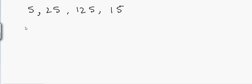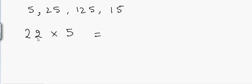Let's do the first one — multiply by 5. Suppose I have the number 22 and I want to multiply 22 by 5. All I have to do is divide 22 by 2, which gives 11, and then put a 0 at the end. That will be my answer: 110.